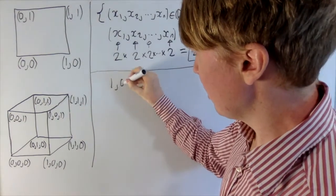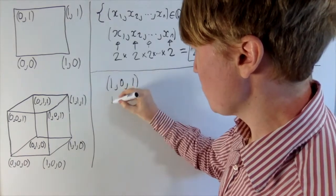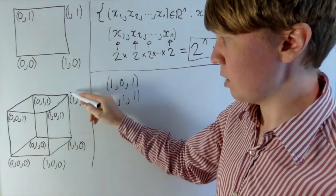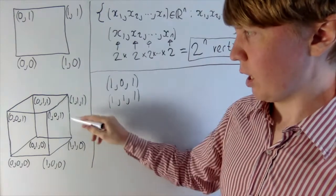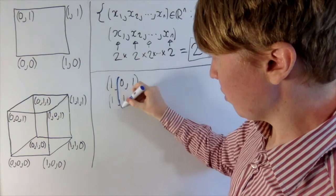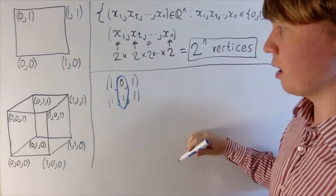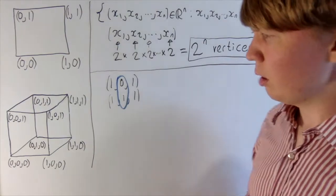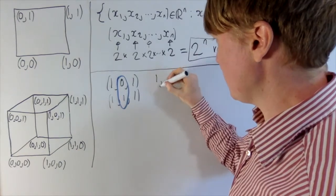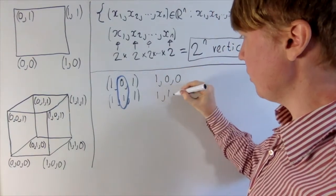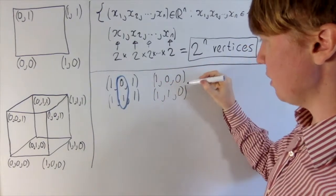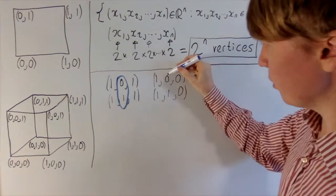This edge takes a step from one vertex to the other in a straight line — here it's in the y direction. This step corresponds to swapping from 0 to 1 in the y coordinate, and the other coordinates stay the same. Looking at another example, (1,0,0) and (1,1,0): the x and z coordinates stay the same, with a difference only in the y coordinate.